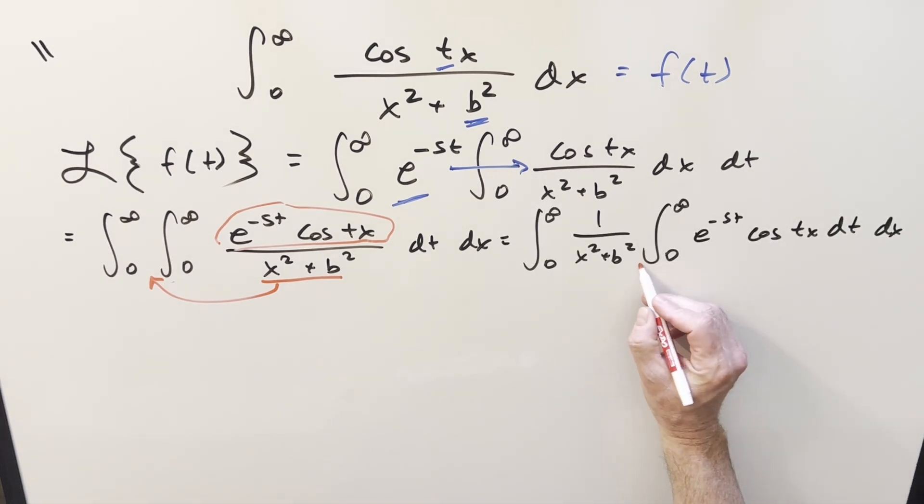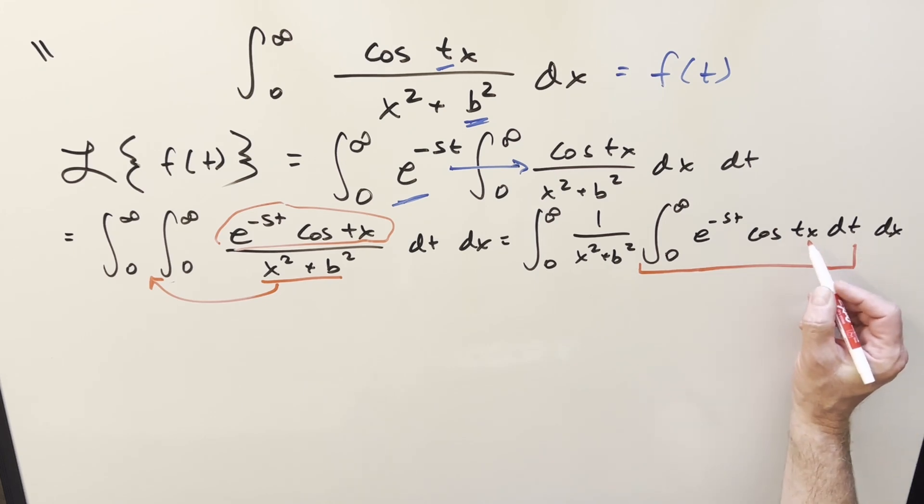Now in order to do this Laplace transform, we just need to be a little bit careful with our variable names because usually we don't think of x as a constant. But with respect to t in this situation here, this is just going to be our constant, the coefficient on the t. So normally our Laplace transform formula for cosine of at would be s squared plus a squared with s in the numerator. But in our case, the constant is just this x. So this here is going to become an x squared.